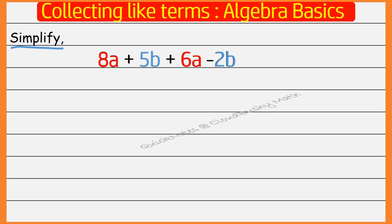So let's collect like terms or put the like terms together. We have 8a plus 6a plus 5b minus 2b.